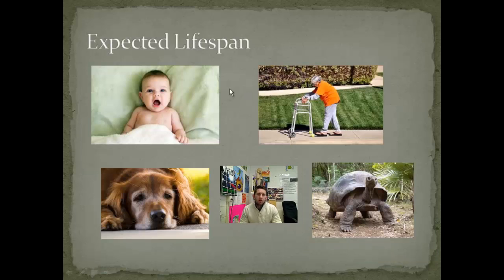Organisms have an expected lifespan. Whatever the organism, its lifespan is fairly unique to it. For humans, it's in the 70s; for dogs, it's different; for the Aldabra tortoise, it's different again. Even within dog breeds, the larger the breed, the shorter they typically live. Tortoises can live up to 200 years.